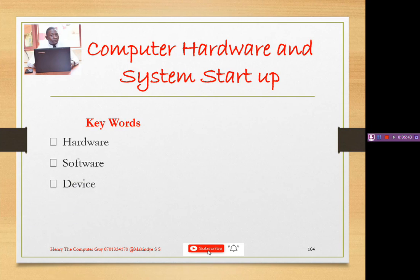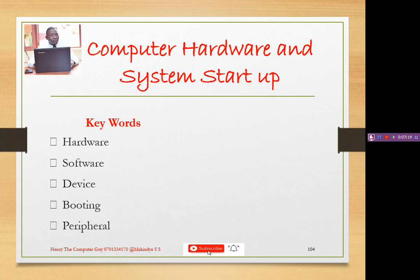We shall talk about a device — these are specifically electronic components we will be calling devices. Then we shall talk about booting, which is the starting of a computer — at times we call it booting. Then we shall talk about peripherals. Peripherals are external components attached to our computer — we can have a printer, a scanner, a keyboard. Anything connected to the system unit from outside is what we call a peripheral device.